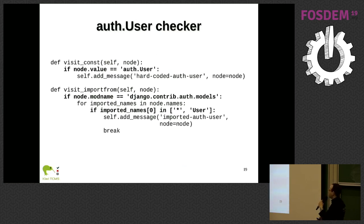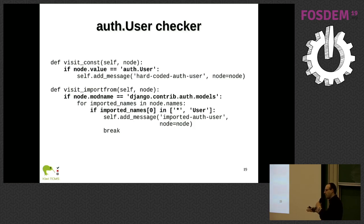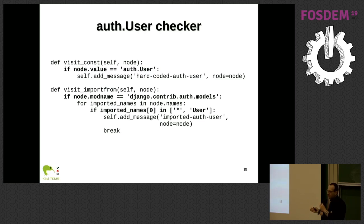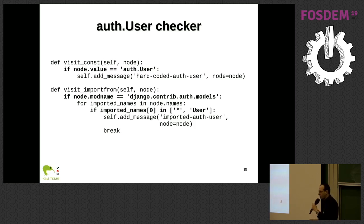The Django checker: we visit const, looking for hard-coded strings. We don't really care if it's inside a foreign key definition or somewhere else — if it's a hard-coded string, we raise an error message for the developer. We also inspect imports: if we see something like from django.contrib.auth.models import User, or a wildcard import, again it's an error for the developer to inspect.